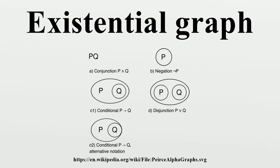Iteration. Deiteration. To understand this rule, it is best to view a graph as a tree structure having nodes and ancestors.